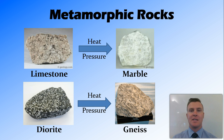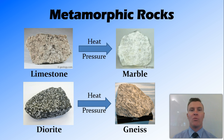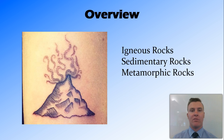So you can see these rocks are made from other rocks. The common thing here is heat and pressure, and the difference between the type of rock will be the different sedimentary or igneous rock that the metamorphic rock is made of.